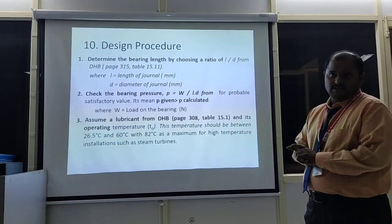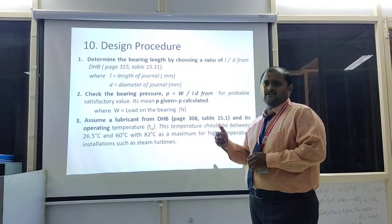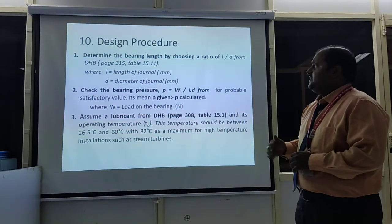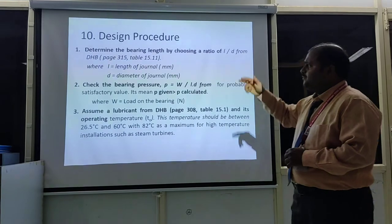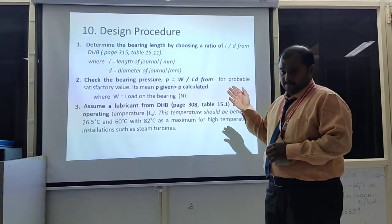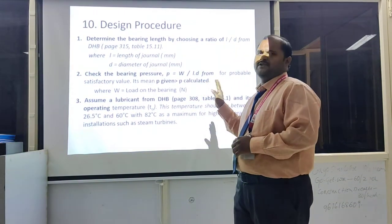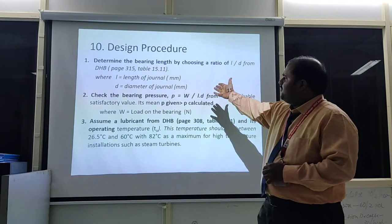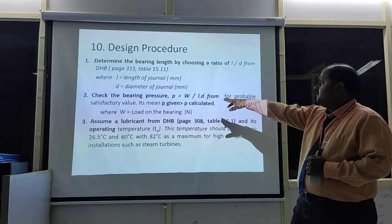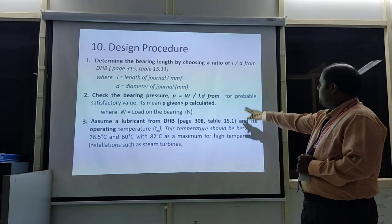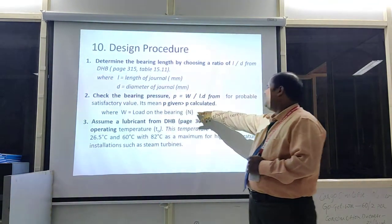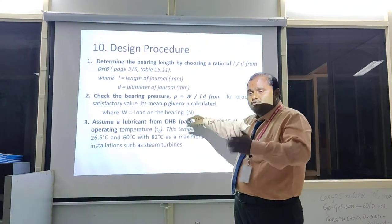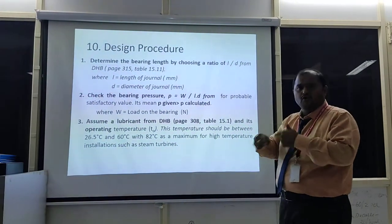Design procedure for sliding contact bearing: Step 1 — determine the bearing length by choosing the ratio L/D from the data book (either MD Jalaviathan or PSG College of Engineering data book), where L is the length of the journal and D is the diameter of the journal. Step 2 — check the bearing pressure using the formula P = W / (L × D). The given P should be less than the found value, where W is the load on the bearing.